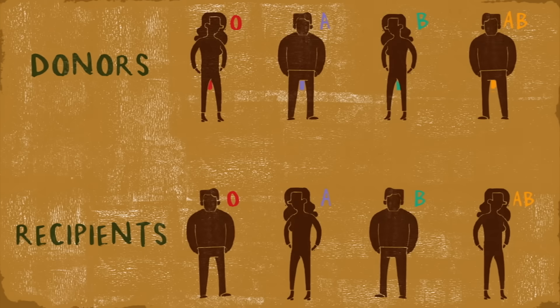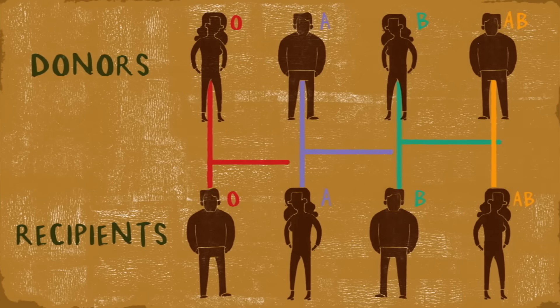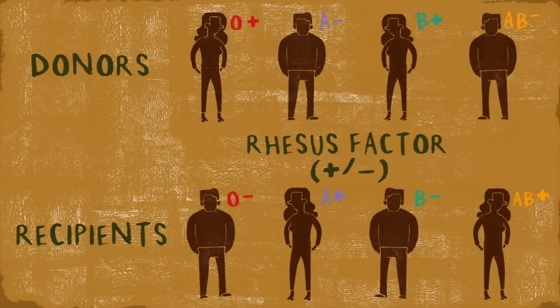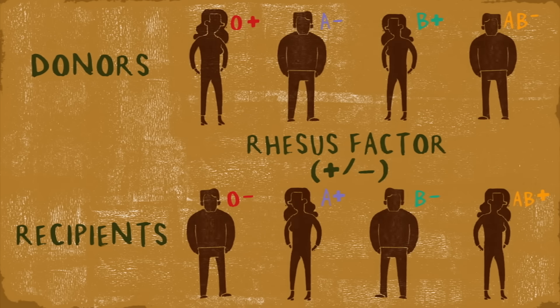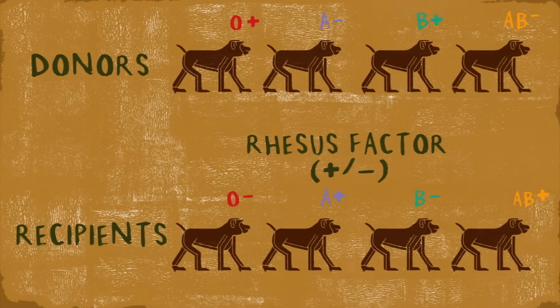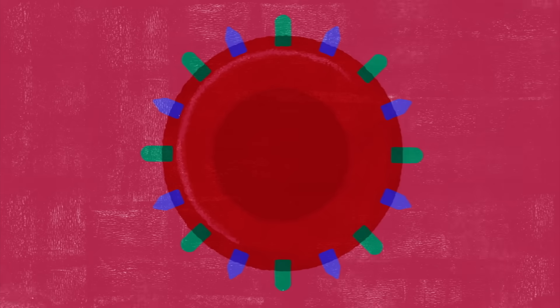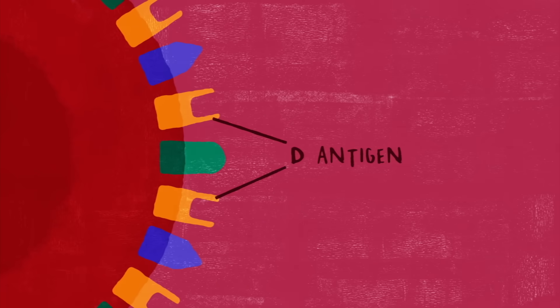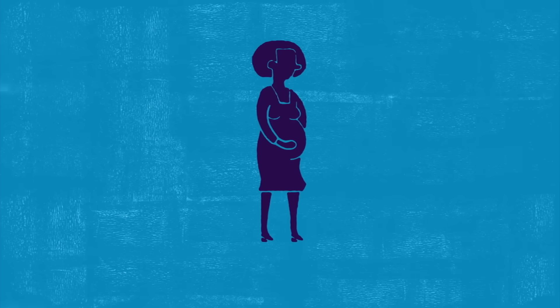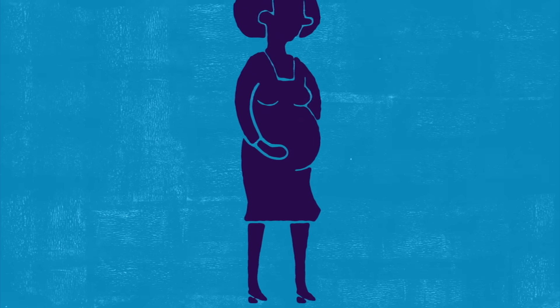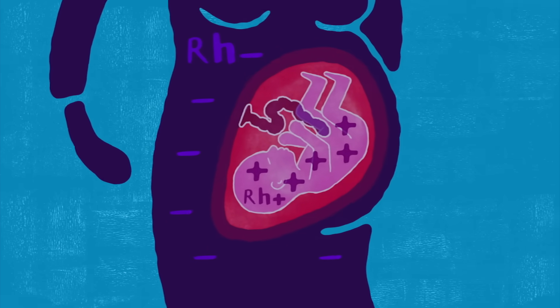Unfortunately, matching donors and recipients is a bit more complicated due to additional antigen systems, particularly the Rh factor, named after the rhesus monkeys in which it was first isolated. Rh plus or Rh minus refers to the presence or absence of the D antigen of the Rh blood group system, and in addition to impeding some blood transfusions, it can cause severe complications in pregnancy.